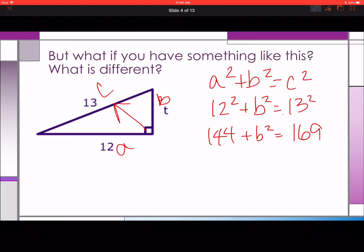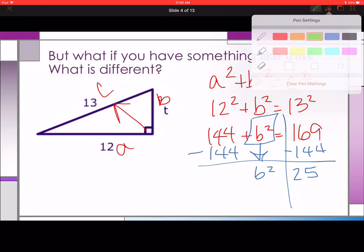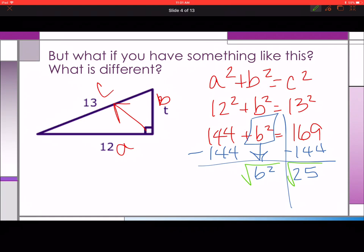But now I have to bioboop. I have to solve it by drawing the barrier, isolating our variable, doing the opposite operation, bringing down our variable term, doing the opposite operation. And what's the opposite of squaring the number? Square root. Don't forget you've got to solve for the square root.